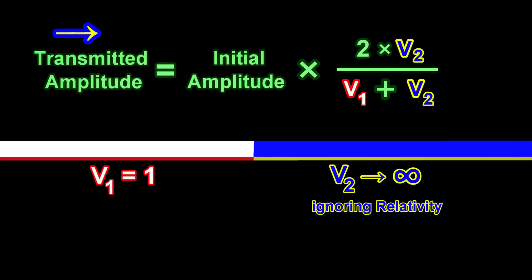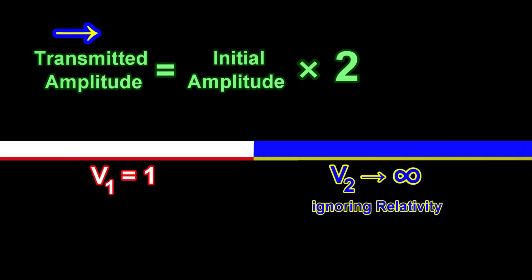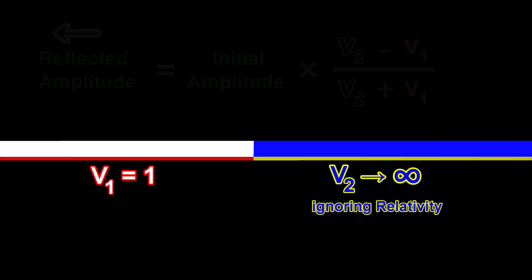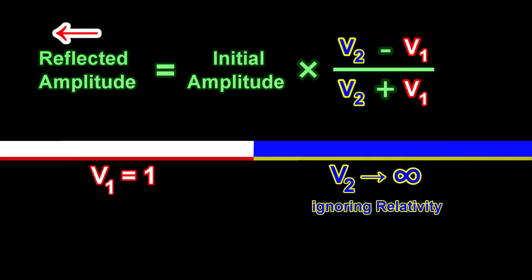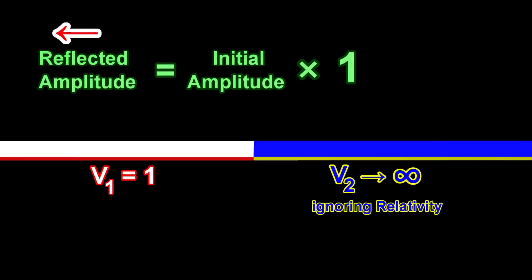As V2 keeps increasing, the amplitude of the transmitted wave gets closer and closer to double the amplitude of the initial wave, but never exceeds this value. Similarly, the amplitude of the reflected wave gets closer and closer to the amplitude of the initial wave, but never exceeds it.